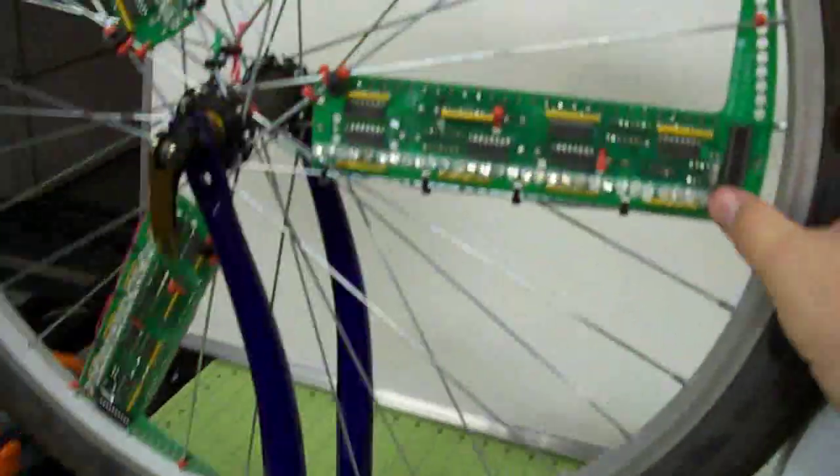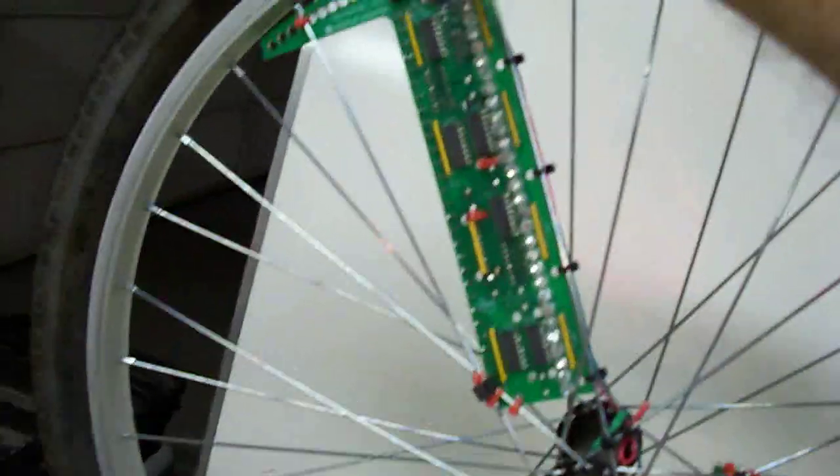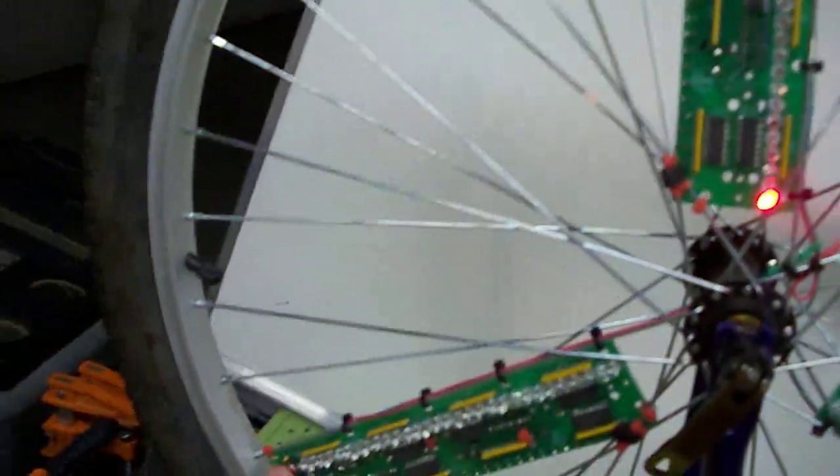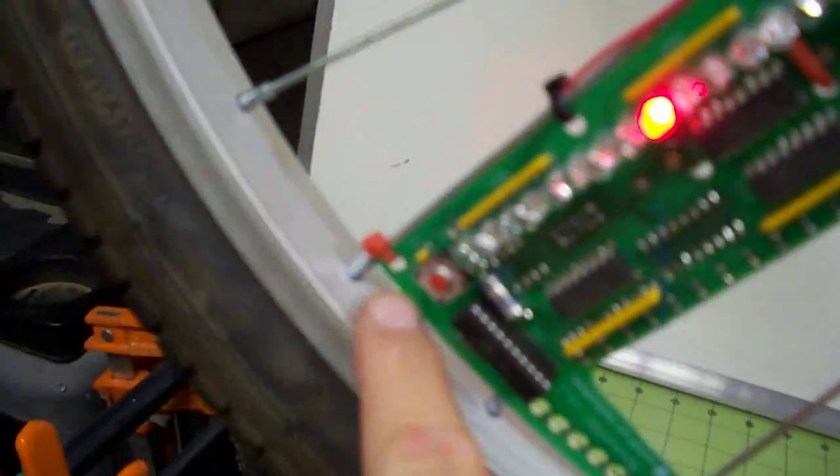So we'll go ahead and turn on the persistence of vision boards. They all trigger off of just one of these hall effect sensors. If you notice the other boards, I've removed the hall effect sensor on the other boards and they all trigger.